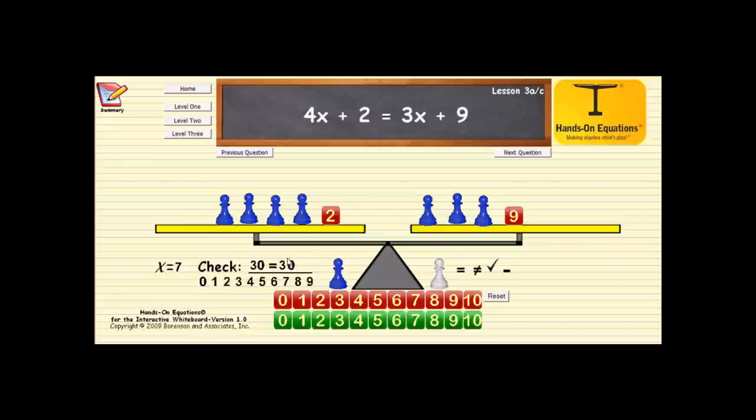And since 30 equals 30, we have solved our equation. So this is an example of the use of hands-on equations for the interactive whiteboard lesson number three.